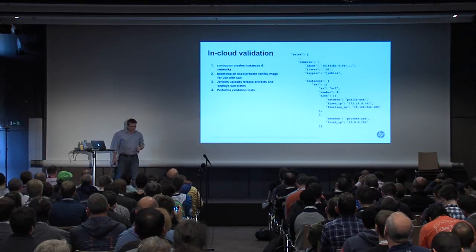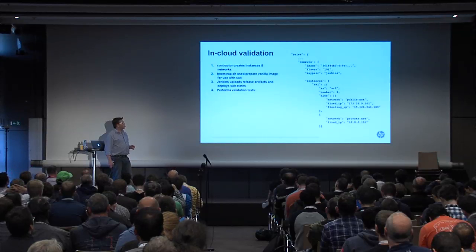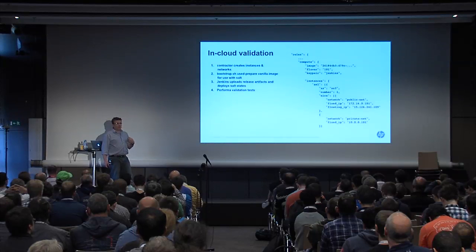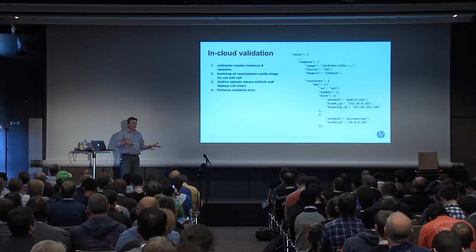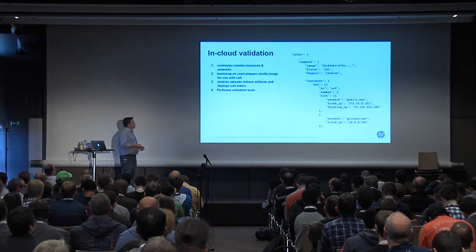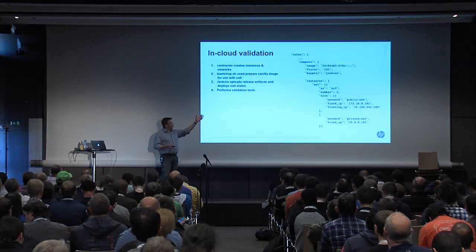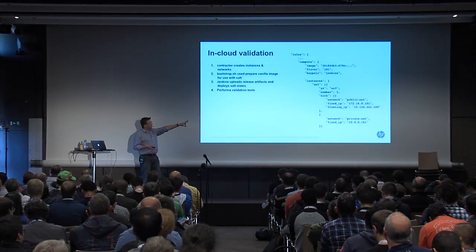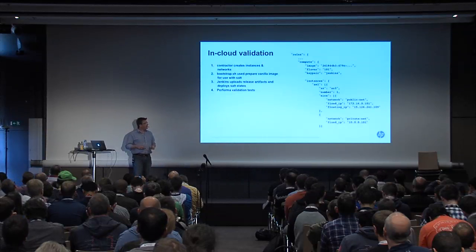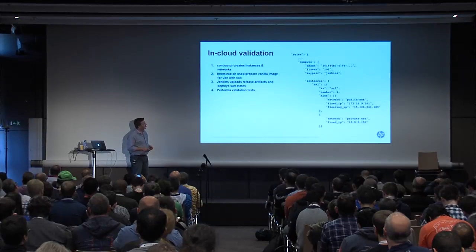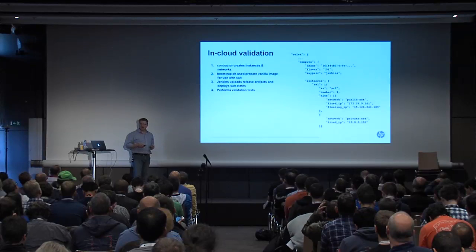I mentioned about creating ephemeral test environments. To do that, we needed to be able to create a set of Nova instances matching Nova network and router objects to allow the rest of our system to build out a system on top of that. We do that with a tool called Contractor. Contractor takes a very simple JSON definition of instances and networks. It's kind of like really, really super lightweight Heat for environments where you don't have Heat or you don't want to use it. This is my third iteration of a tool that builds instances and networks in a coordinated fashion.